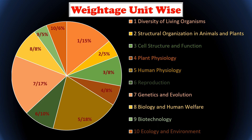The highest weightage goes to human physiology and plant physiology — both Unit 4 and Unit 5 — carrying 18% each, totaling 26% combined. Genetics and Evolution carries 17% weightage. After these two units, the first unit — Diversity of Living Organisms — carries 15% weightage.